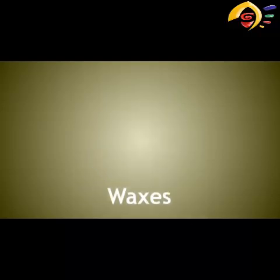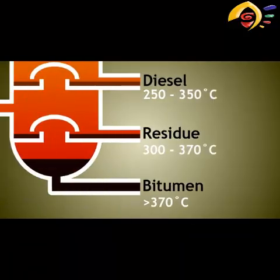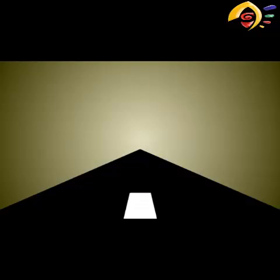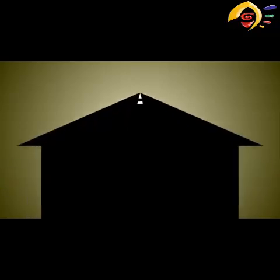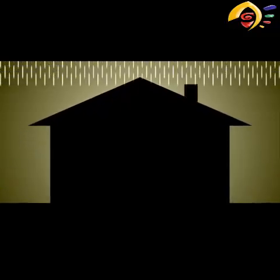The very bottom fraction is bitumen. This is a thick black adhesive used on roads either as the surface finish or combined with stone chippings to create a solid resistant material. It can also be used to cover roofs due to its waterproofing properties.